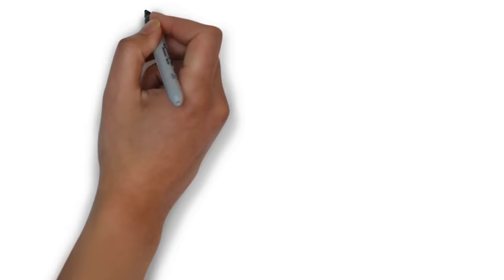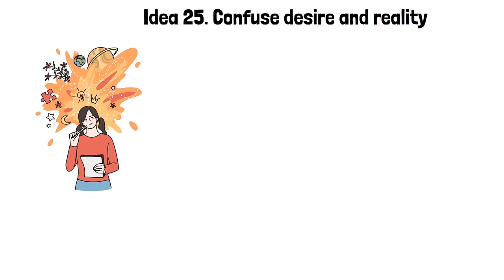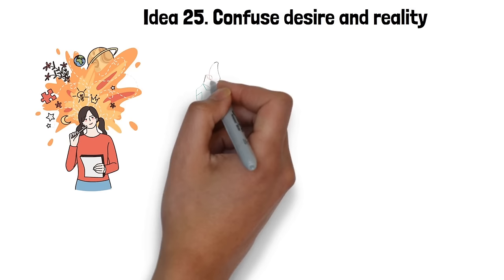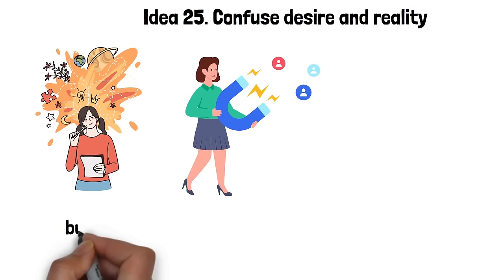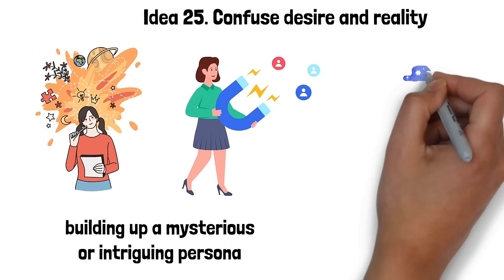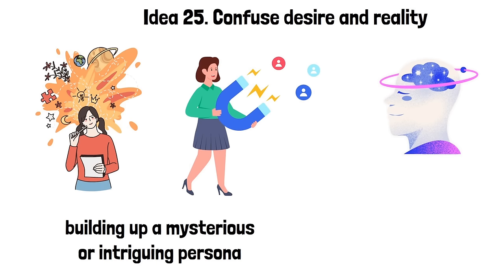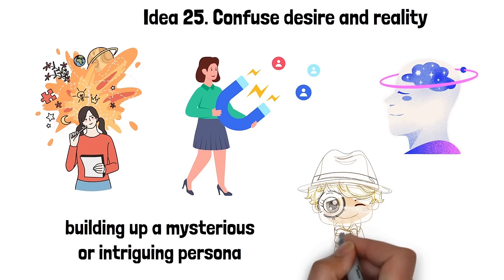Idea 25. Confuse desire and reality. Confusing desire and reality in the context of seduction involves blurring the lines between what is real and what is a product of the imagination or desire. It's about creating an enticing fantasy that captures the other person's attention and emotions. This could be through building up a mysterious or intriguing persona, playing into their dreams and fantasies, or constructing situations that feel surreal or dreamlike. The aim is to captivate their mind and emotions, making them more open to the allure and thrill of the seductive experience. This approach takes advantage of the human tendency to be drawn towards the mysterious and the extraordinary, making the seduction process more intriguing and irresistible.